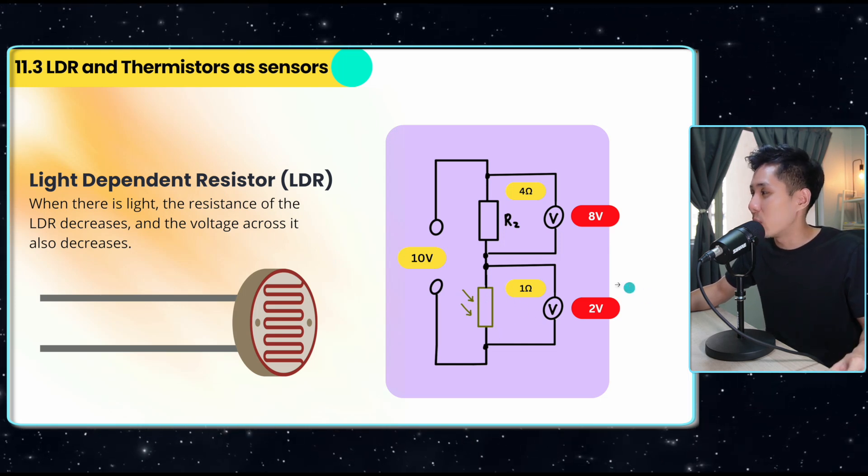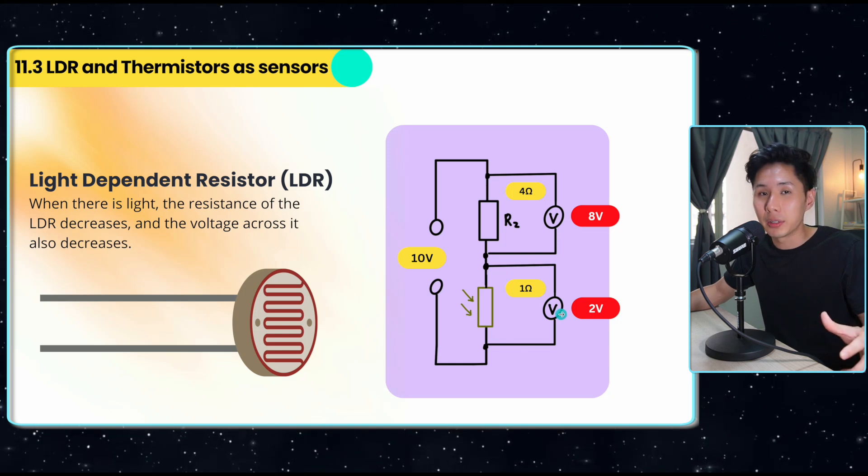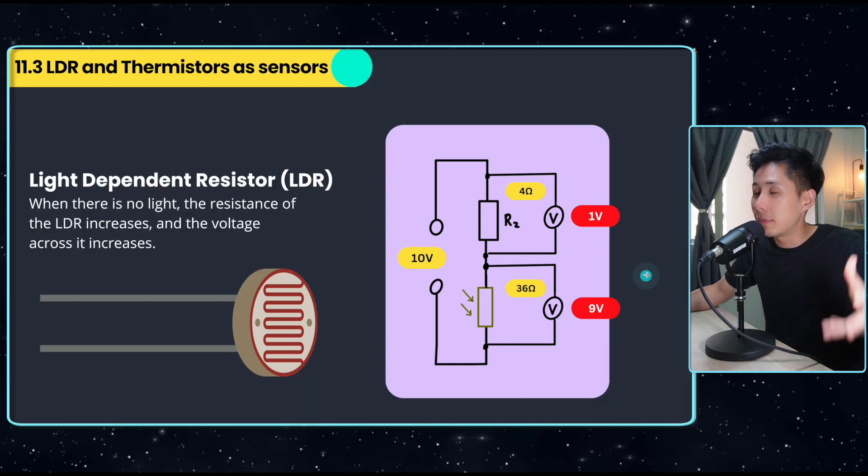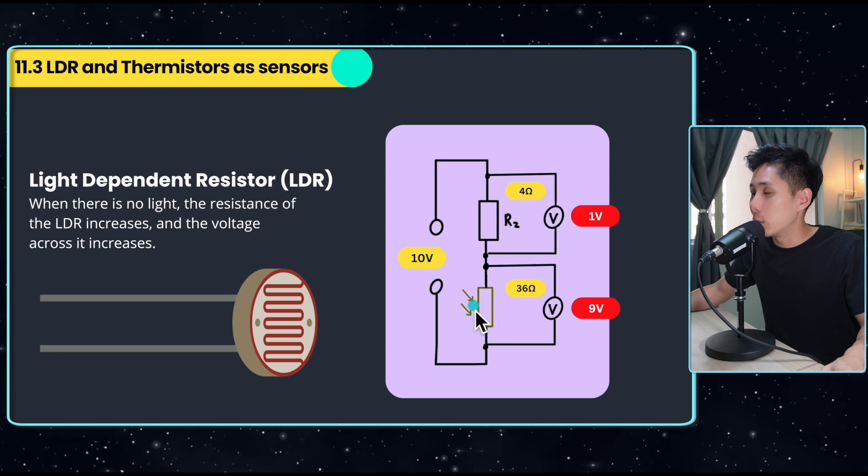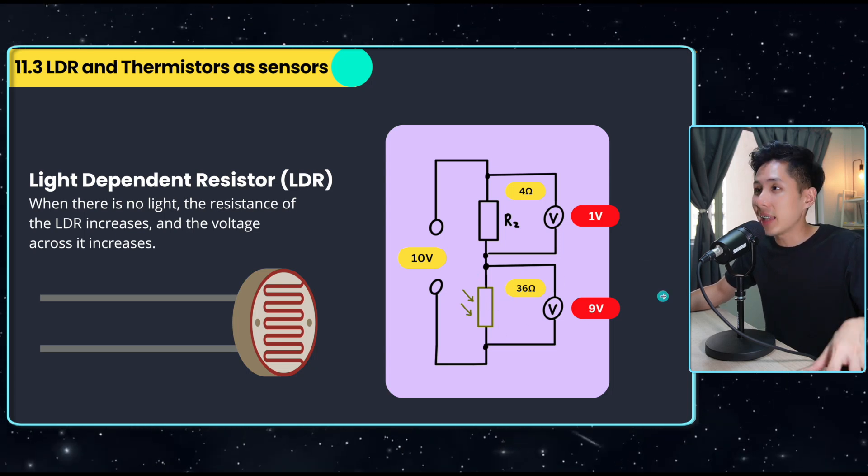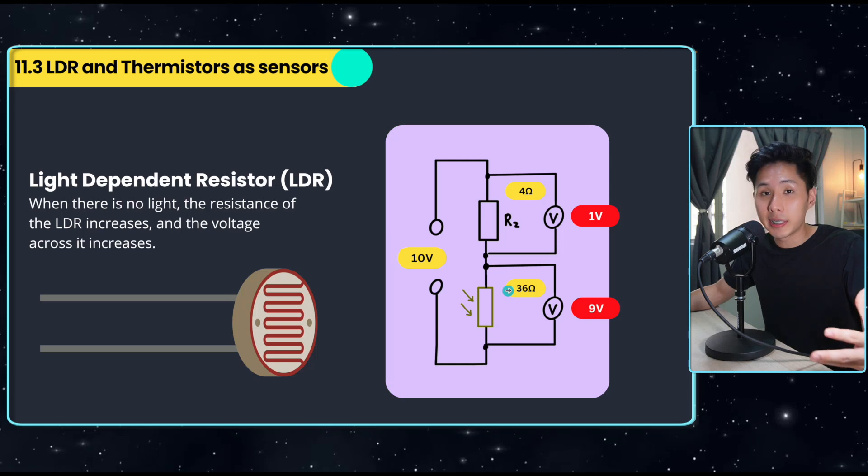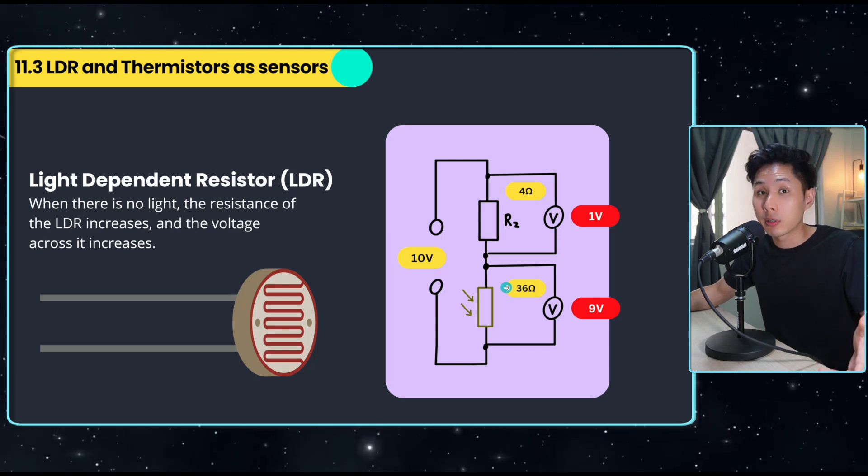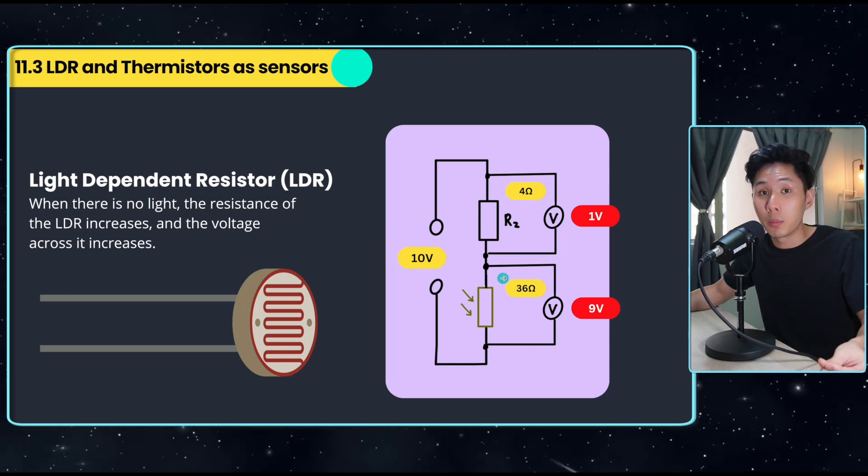When you have low resistance here, voltage will also be low according to the potential divider equation. If you switch off the light, the voltage will increase because the resistance increases. So that's how LDR can be used as a sensor. When the resistance changes, the current will also change to switch on some of the components.